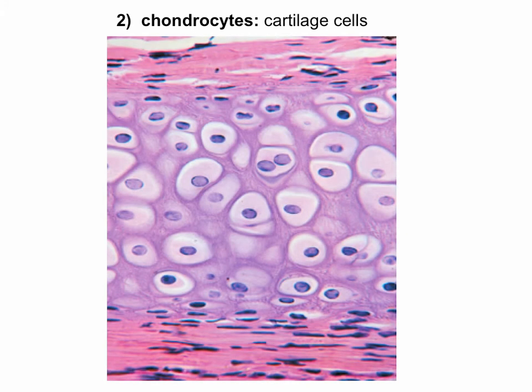Chondrocytes are cartilage cells — 'chondro' refers to cartilage and 'cytes' means cells. You've seen some of these when setting up your flashcards. We'll talk about why the cells often appear in pairs, which is one of the ways you can identify a slide of cartilage tissue from any other kind of connective tissue.